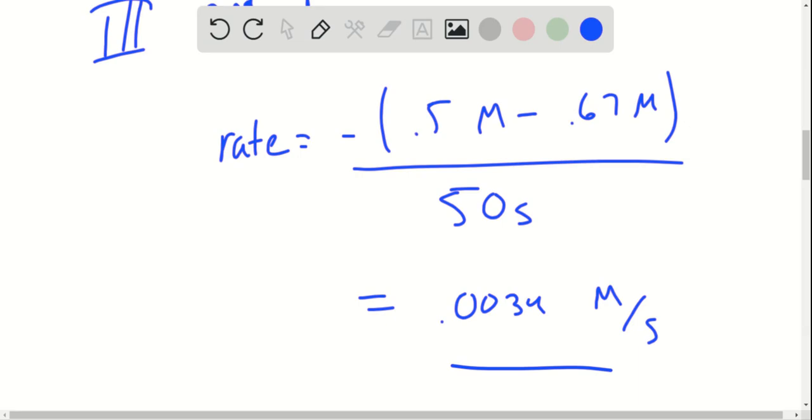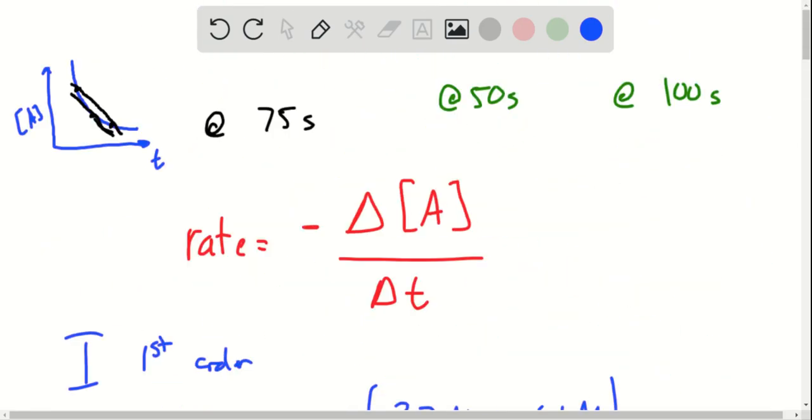This is how you generally do your approximations. If you're trying to approximate at a certain time, you'll take nearby data points around it and do a delta concentration over delta T analysis.